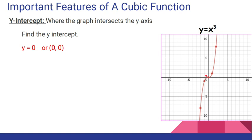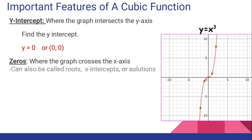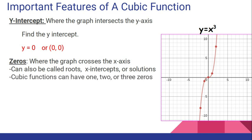The most important feature we're going to be talking about are the zeros of the graph. This is where the graph crosses the x-axis. They could also be called roots, x-intercepts, or solutions. For a cubic function, there could be either one, two, or three zeros, depending on how many times the graph crosses the x-axis. For this parent function, there should only be one zero. It's right here at the origin, so it crosses at the point (0, 0), and I just want the x value, which is 0. So there's one zero and it's x equals 0.